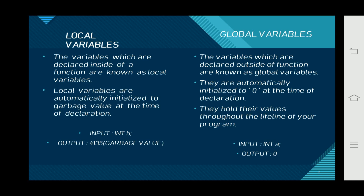See the example below — I am giving input integer data type. I wrote uppercase but we should write in lowercase: small int. And the output is garbage value. Now let's go into global variables. The variables which are declared outside of a function are known as global variables. They are automatically initialized to zero at the time of declaration and hold their values throughout the lifetime of your program.